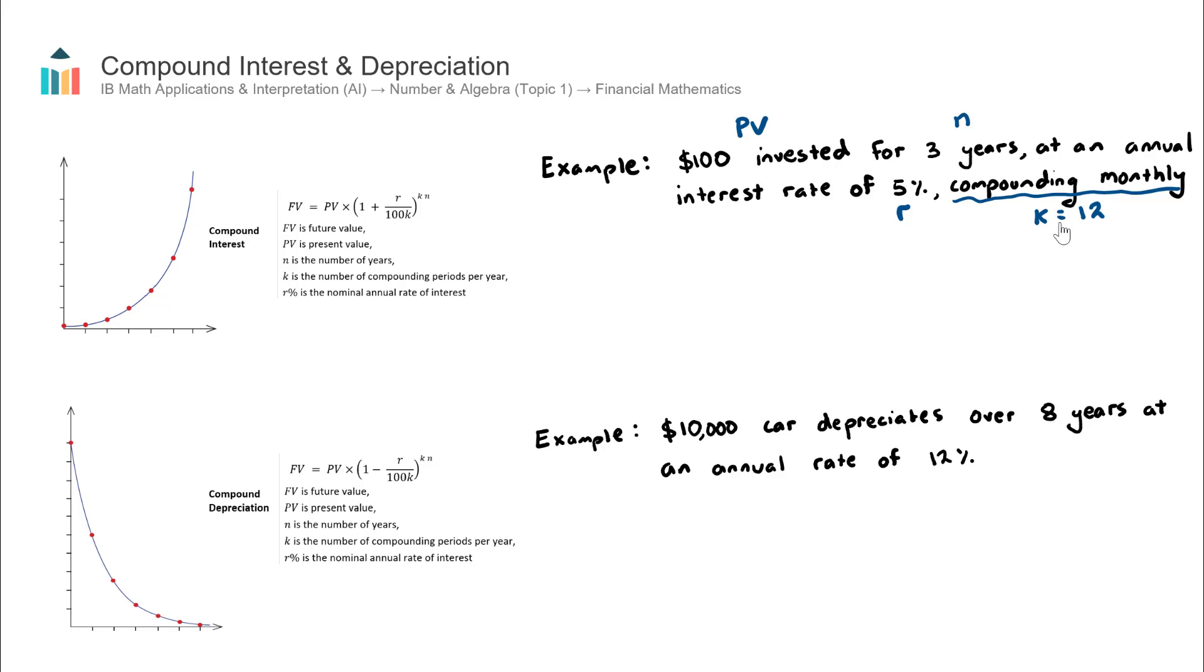If it said compounding quarterly, my K value would be 4, because there are 4 quarters in a year. If it was semi-annually, my K value would be 2, and if it was compounding annually, my K value would be 1. So that's the first step to identify all the key information in the question. Let's now solve this.